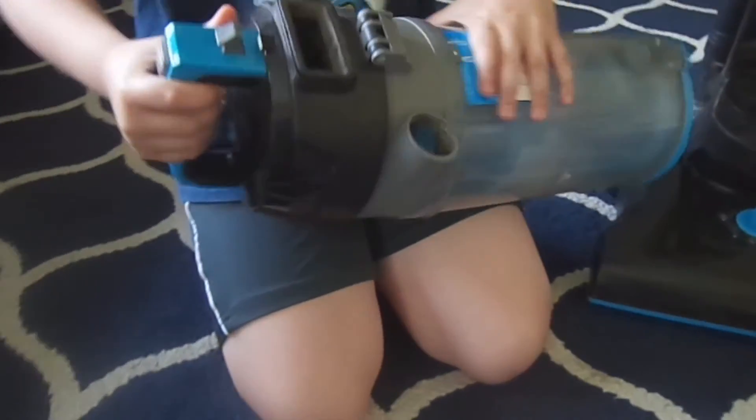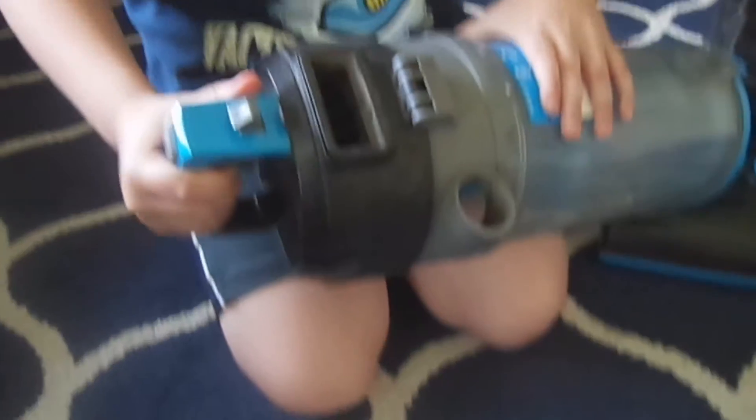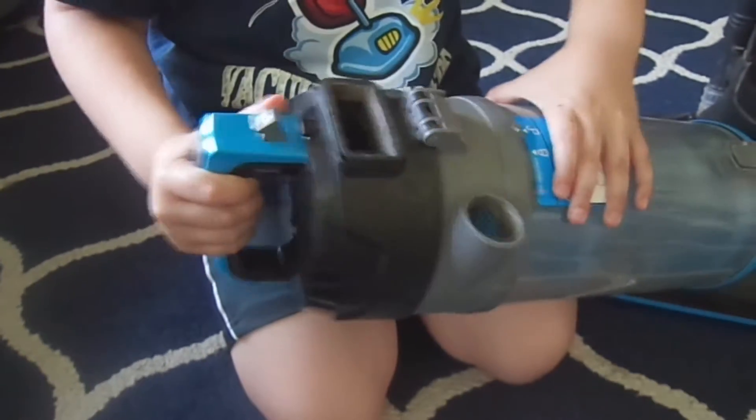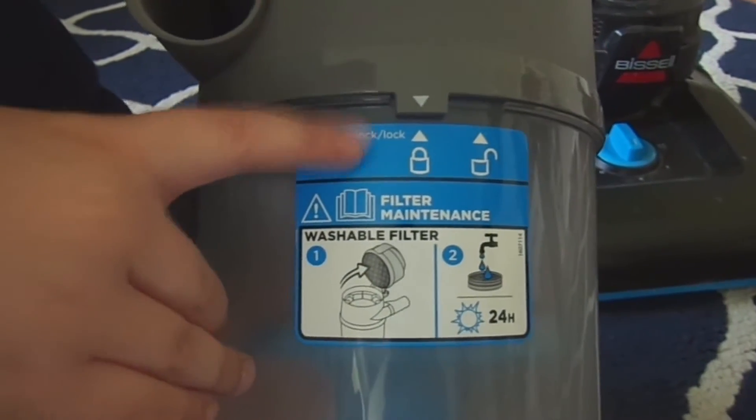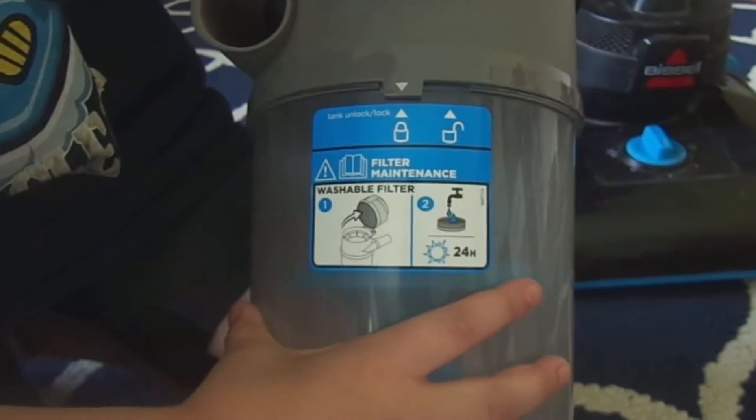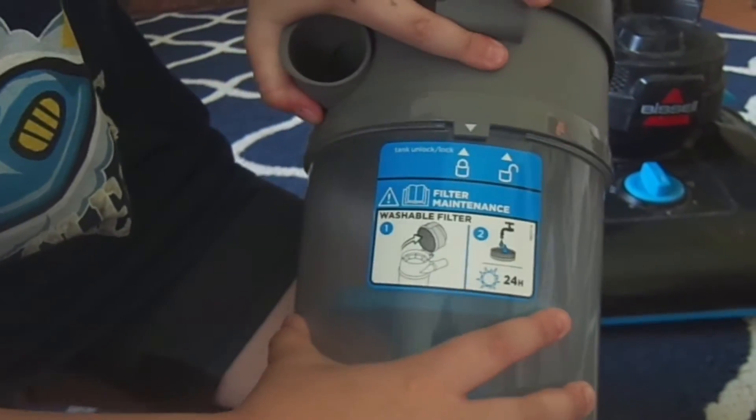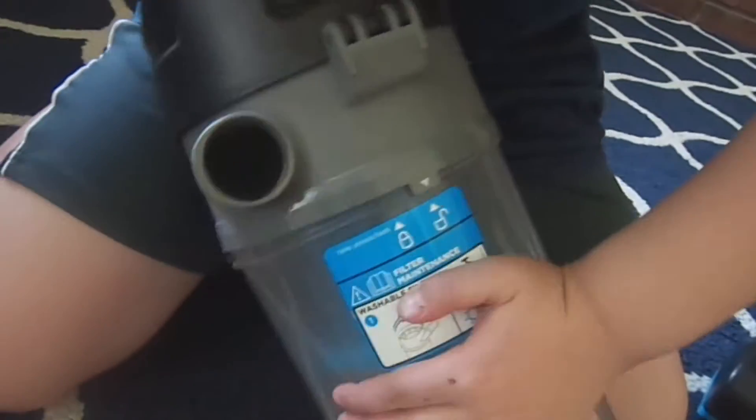So I found a little sneaky thing that was hiding from me. So right here on the back, it says tank unlock and lock. So you have to turn your machine to the unlock. It's a little difficult. You have to hold it by the handle.